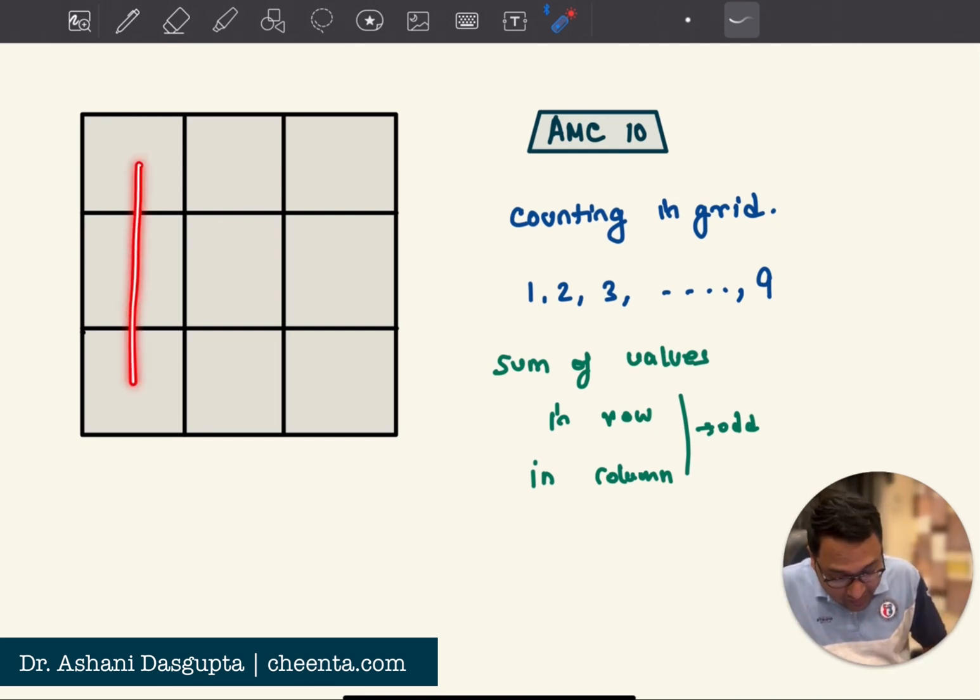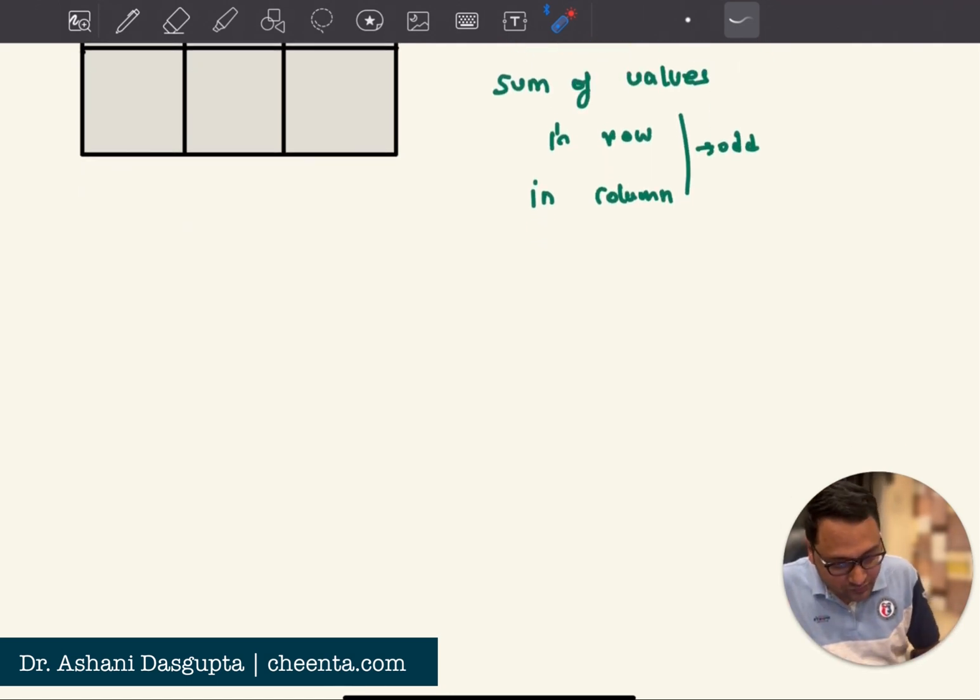You add the numbers in this column, this column or this column, all of them should be odd. You add the numbers in this row, this row or this row, all of them should be odd. So that's how the numbers are sort of spread around. We want to know how many ways can this be done.